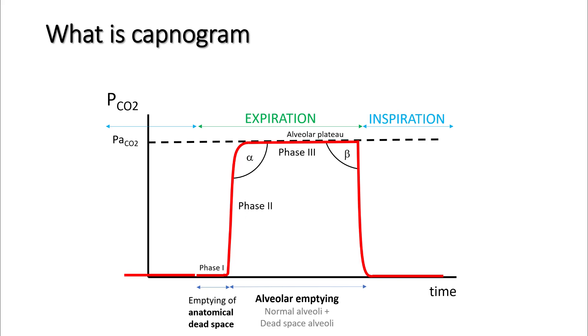The highest portion of the capnogram is your end-tidal carbon dioxide. Phase four is the inhalation part that occurs after expiration is complete, and beta is the angle between phase three and phase four.